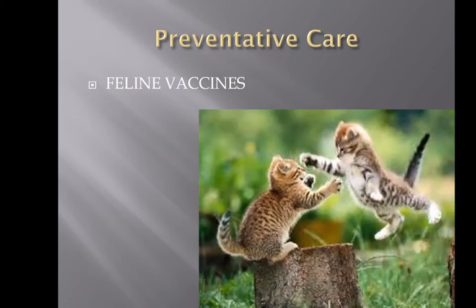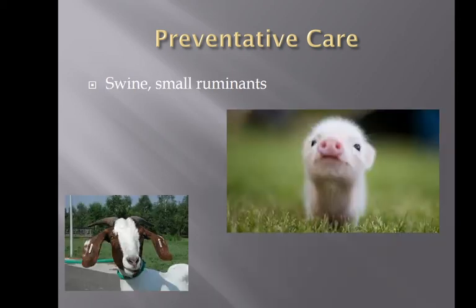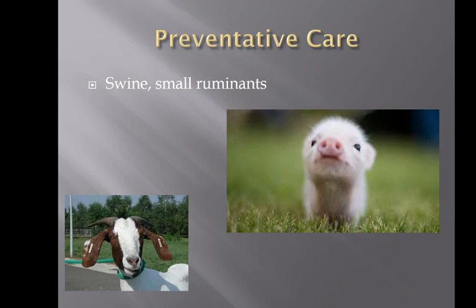Feline vaccines include feline distemper, panleukopenia, leukemia vaccine, FIV vaccine — though if we give FIV vaccine we need to microchip that pet because they'll test positive from then on — and rabies. Swine: swine erysipelas vaccine. Goats need Clostridium C, D, and T — those clostridial diseases with strains CD and tetanus — and rabies as well. Lots of things to remember with immunology and basic vaccine care.